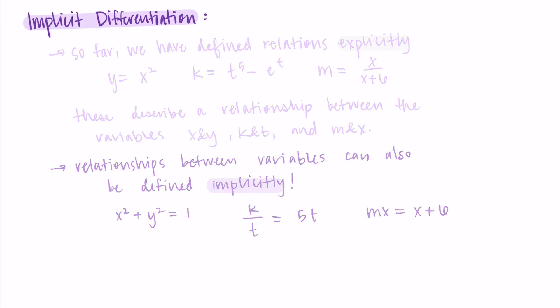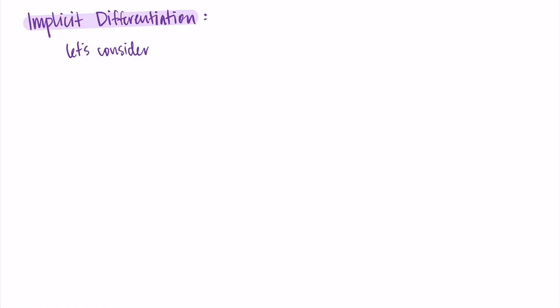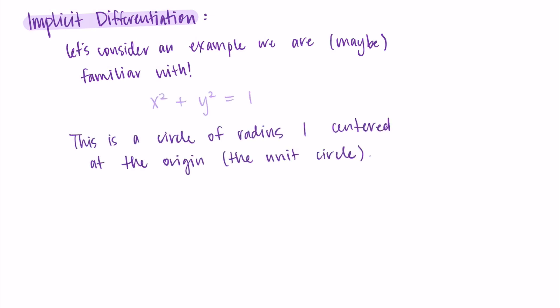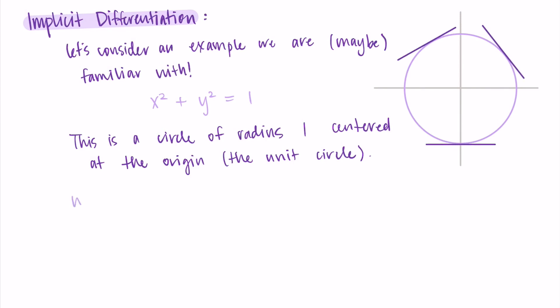So we want to be able to take derivatives in situations where relationships are defined implicitly — we want that power, not just take derivatives when things are explicit. The method really isn't too complicated; we still use everything we know about derivatives, we just have something a little different to consider since we have the variables on the same side of the equation. So let's consider an example: x squared plus y squared equals one. This is a circle of radius one centered at the origin, which is our unit circle, and we'd like to talk about the slope of the tangent line at various points on this circle.